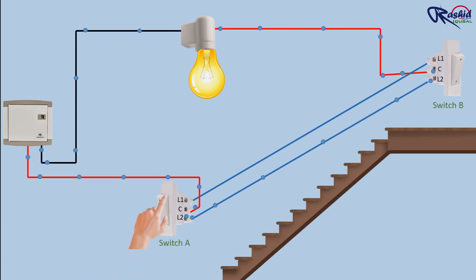If we then flip switch A, the circuit is broken again, so the lamp turns off. But electricity still flows to switch B, where the circuit is broken.